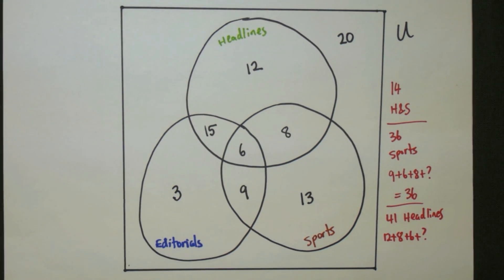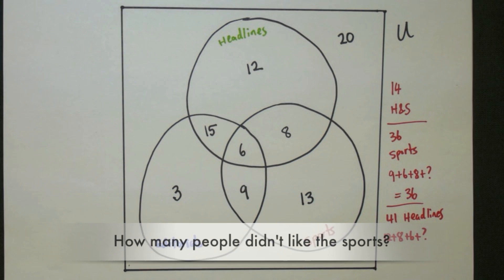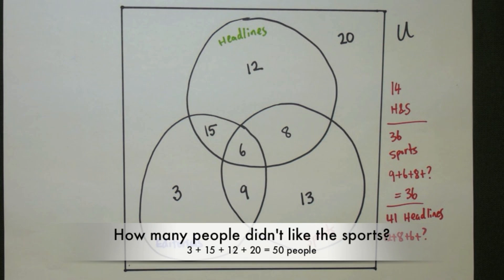Now that all the different parts are filled in, we can use the data that we've collected to answer questions about the survey. So if we wanted to know how many total people took the survey, just add all the numbers together and you see there's 86. Or if you want to know how many people didn't like the sports, we take all the people that aren't inside the sports bubble, which is 50 people.